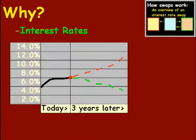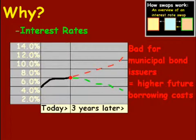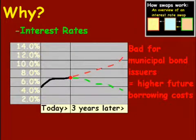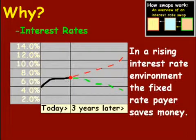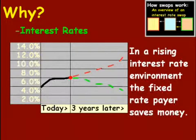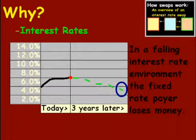The other scenario, shown as the red line, is where interest rates go up. That is bad for municipal bond issuers because it means higher future borrowing costs, and it might not be advantageous to enter the borrowing market when they need financing. In a rising interest rate environment, a fixed rate payer of a swap is going to save money because they don't have to worry about that red line. But the flip side is they're going to have to pay on the swap because they can't take advantage of falling rates. In a falling interest rate environment, the fixed rate payer is going to lose money.